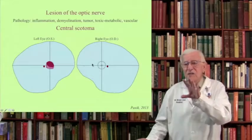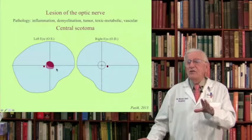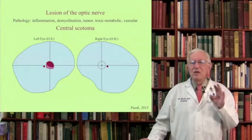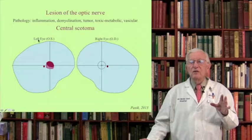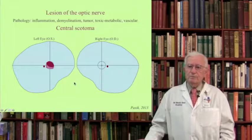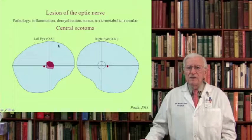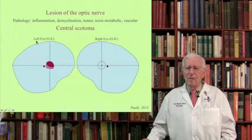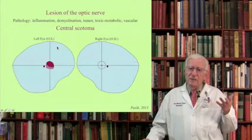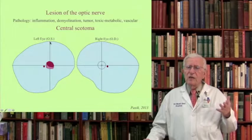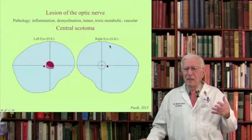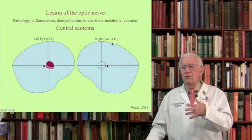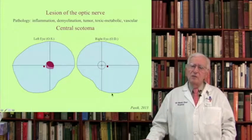With a central scotoma in one eye and the other eye normal, you can be 100% positive that the problem is in the corresponding optic nerve — in this case the left eye. Visual fields are designated as left eye (OS, oculus sinistrus) and right eye (OD, oculus dextrus) — Latin for left and right eye — though you can state it either way.